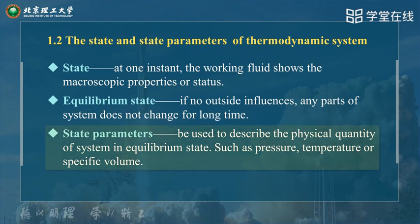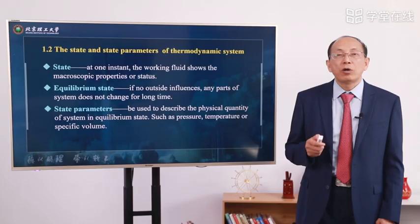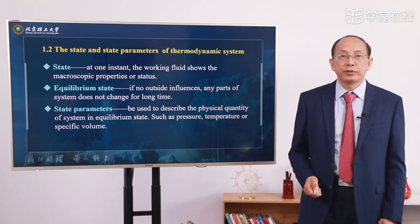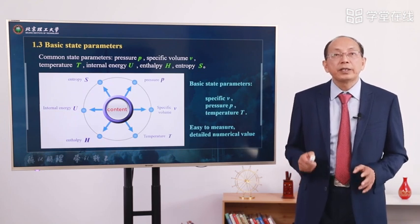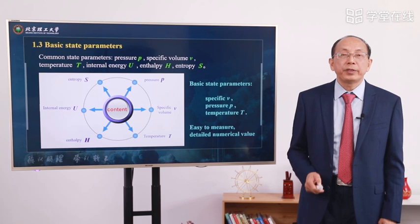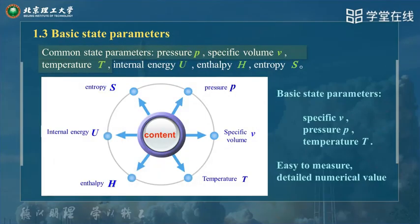Another concept is state parameters. The parameters can be used to describe the physical quantity of a system in equilibrium state, such as pressure, temperature, and specific volume — all of them are state parameters. There may be many state parameters, but here there are three basic parameters: P, V, T. Generally, we have three basic parameters.